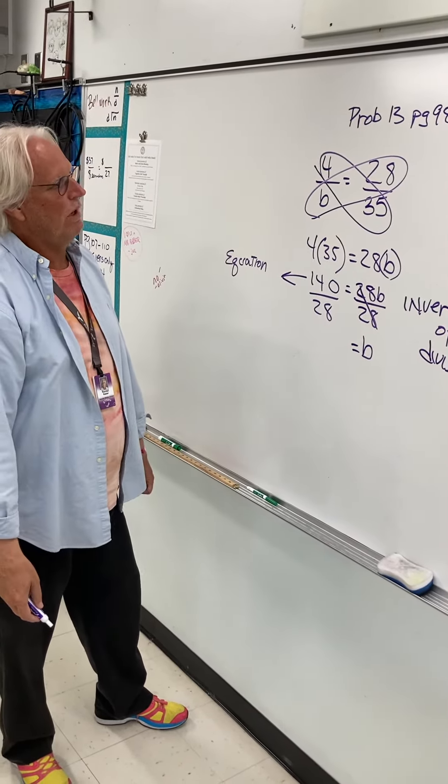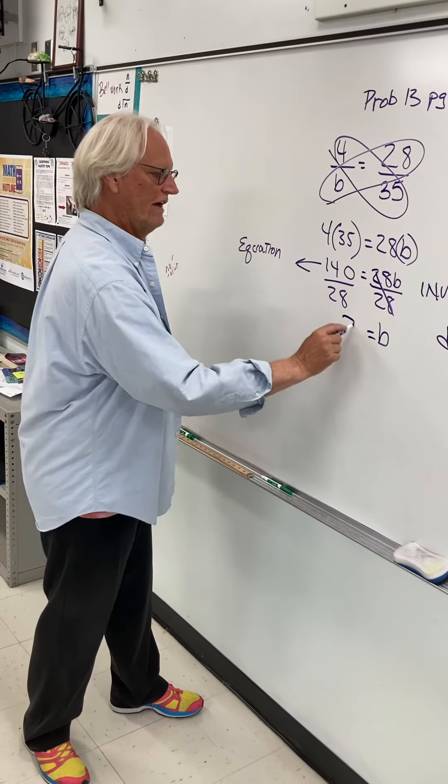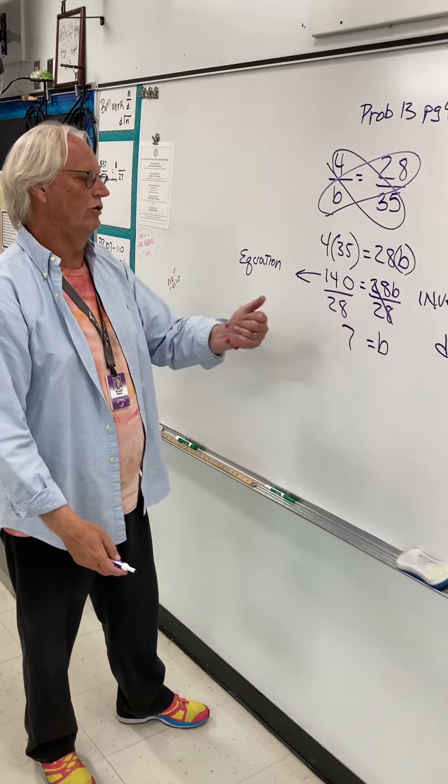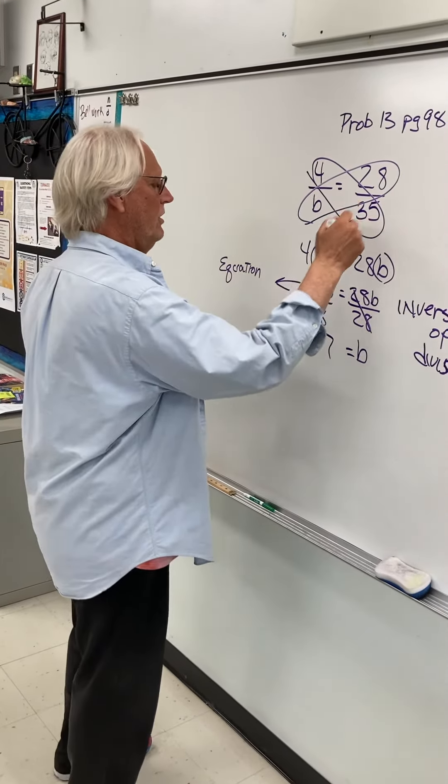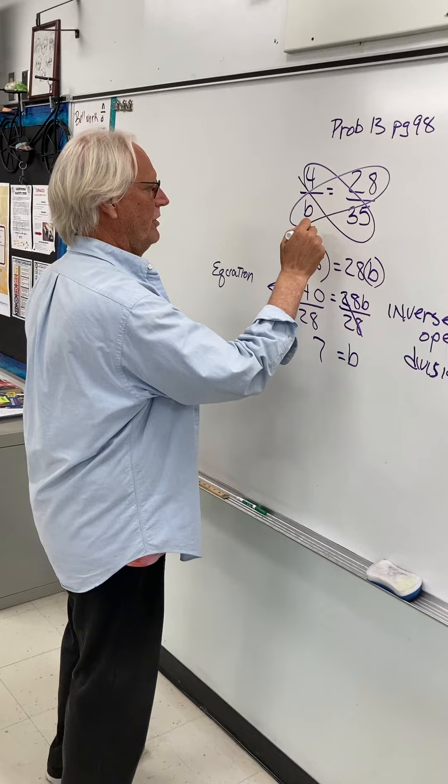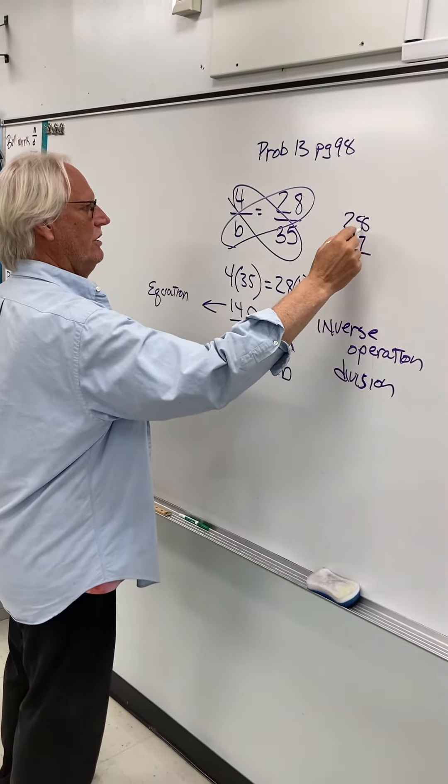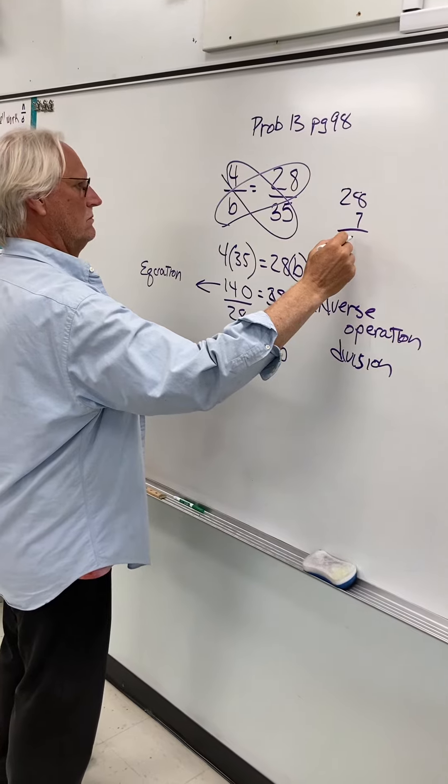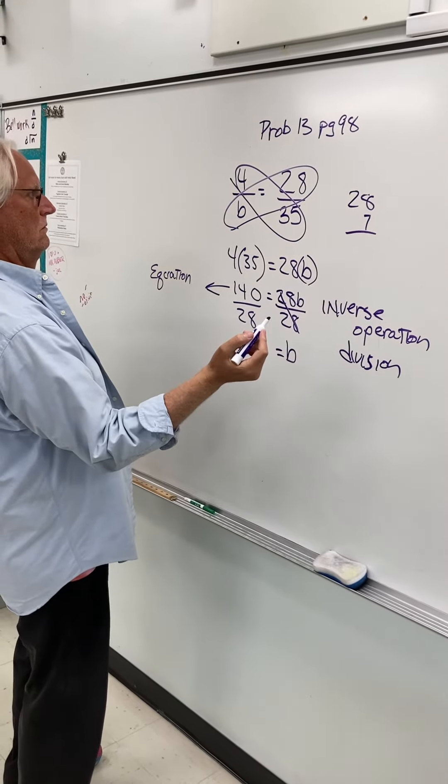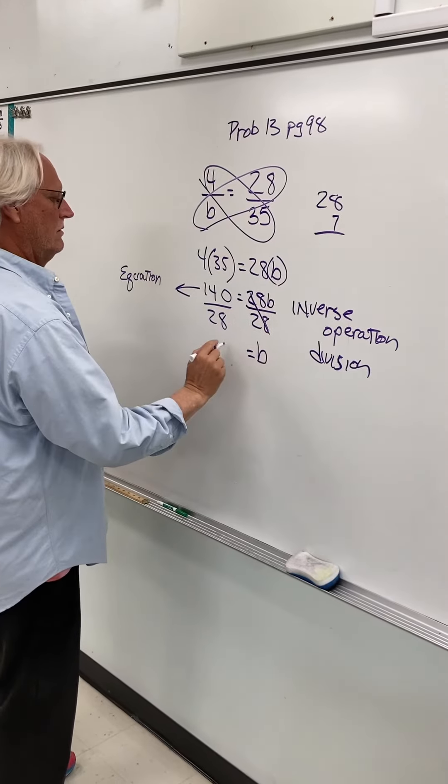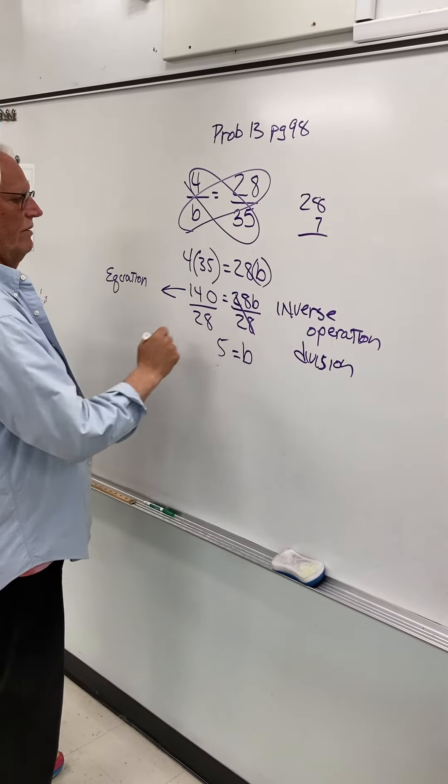And that's probably going to be 5. And so then we can check our work just to make sure that we've got it correct by coming back up here and plugging 7 in up here. So then 28 times 7 is... times 5. Sorry about that. This divided by this is 5.